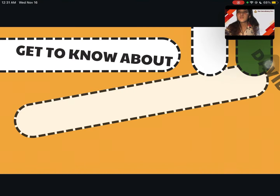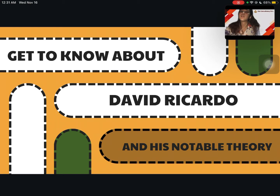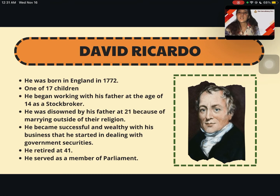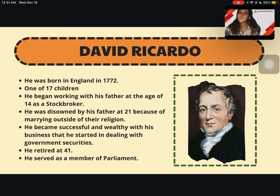Let's get to know about who is David Ricardo and his notable contributions. David Ricardo was born in England in 1772. He is one of 17 children and began working with his father at the age of 14 as a stockbroker. He was disowned by his father at the age of 21 because of marrying outside of their religion. He became successful and wealthy in his business dealing with government securities, and at the age of 41, he retired and served as a member of parliament.